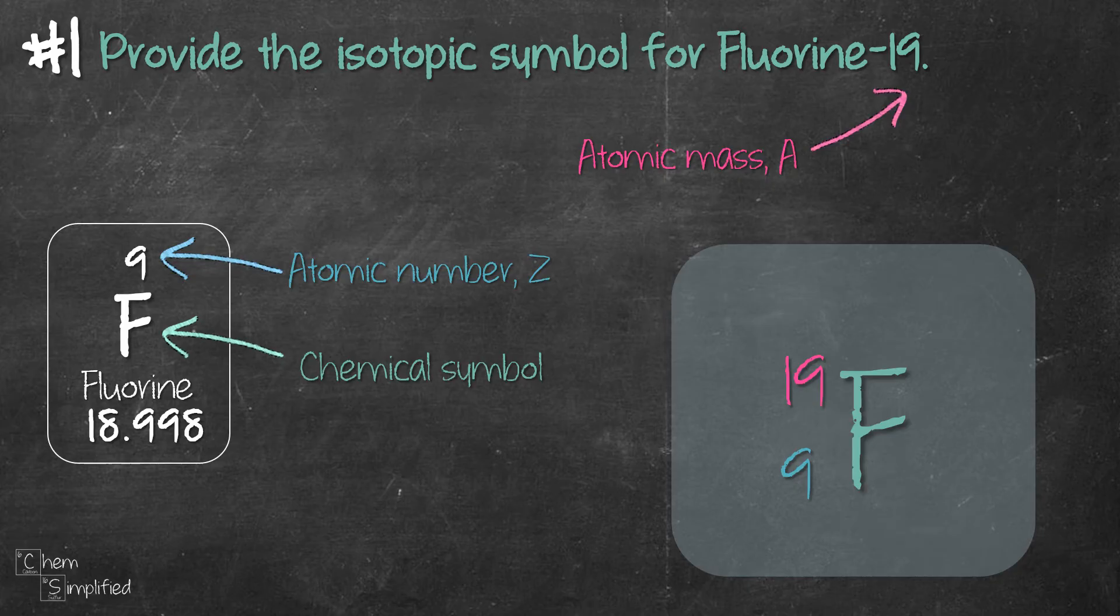And this is what we get. The important point to note is the atomic mass of the isotopic symbol must be written in whole number. Since this represents the mass of a specific isotope.